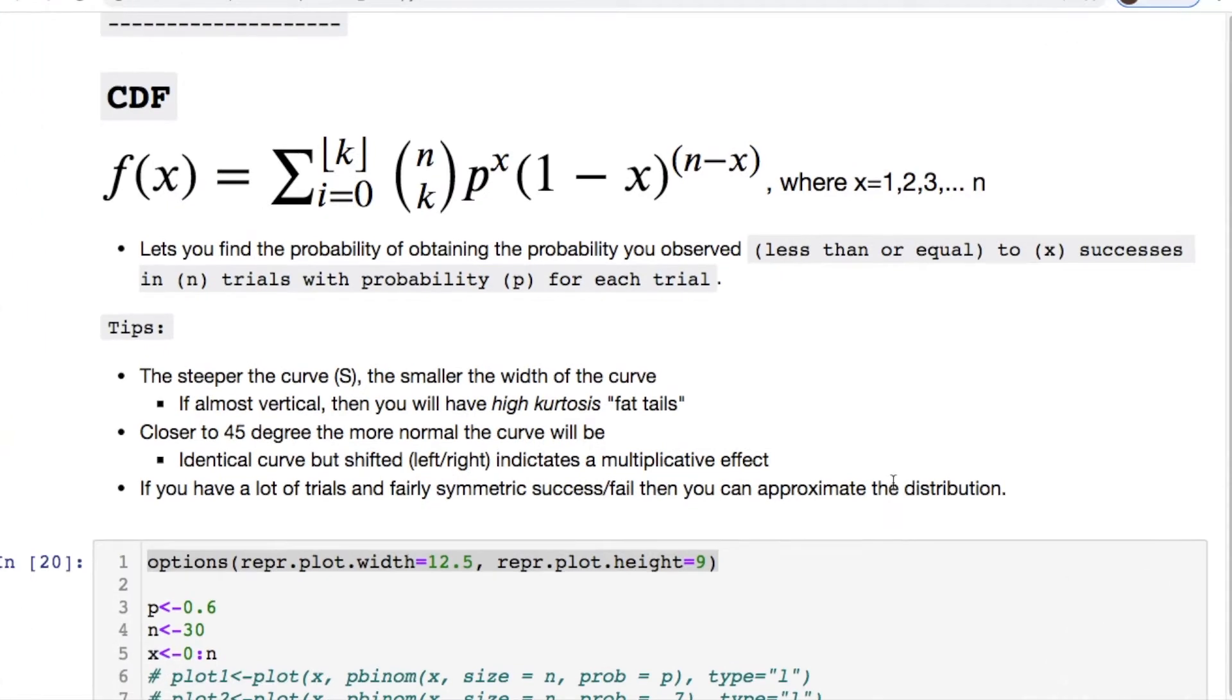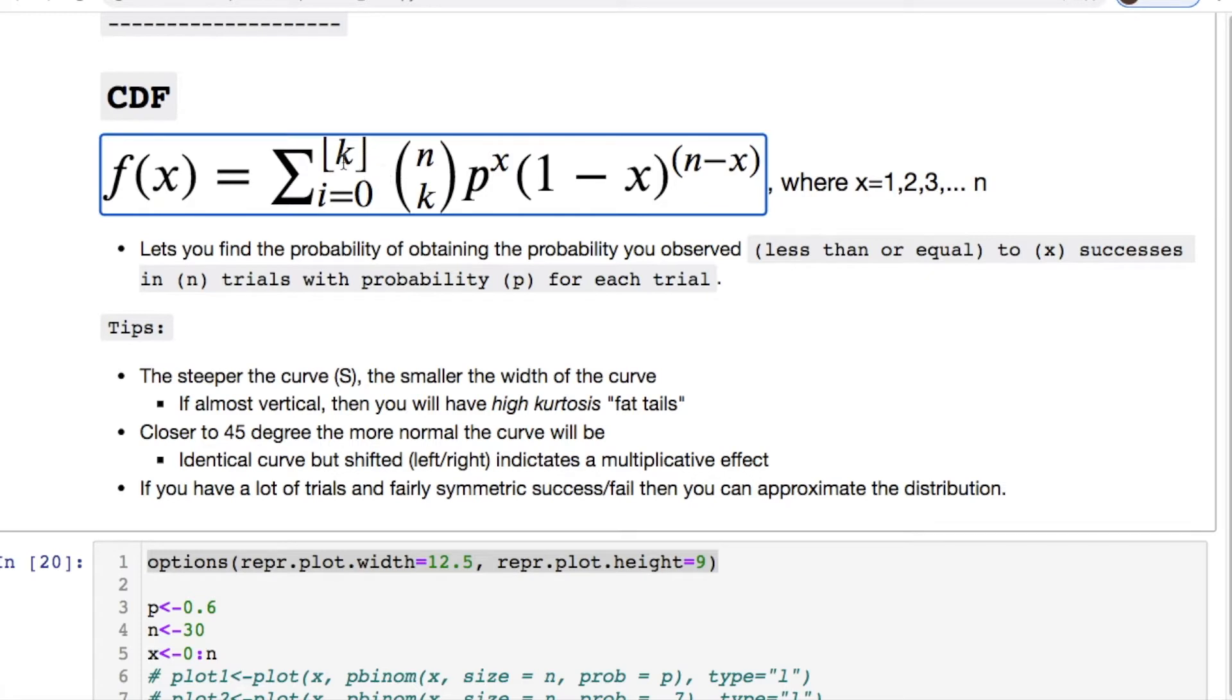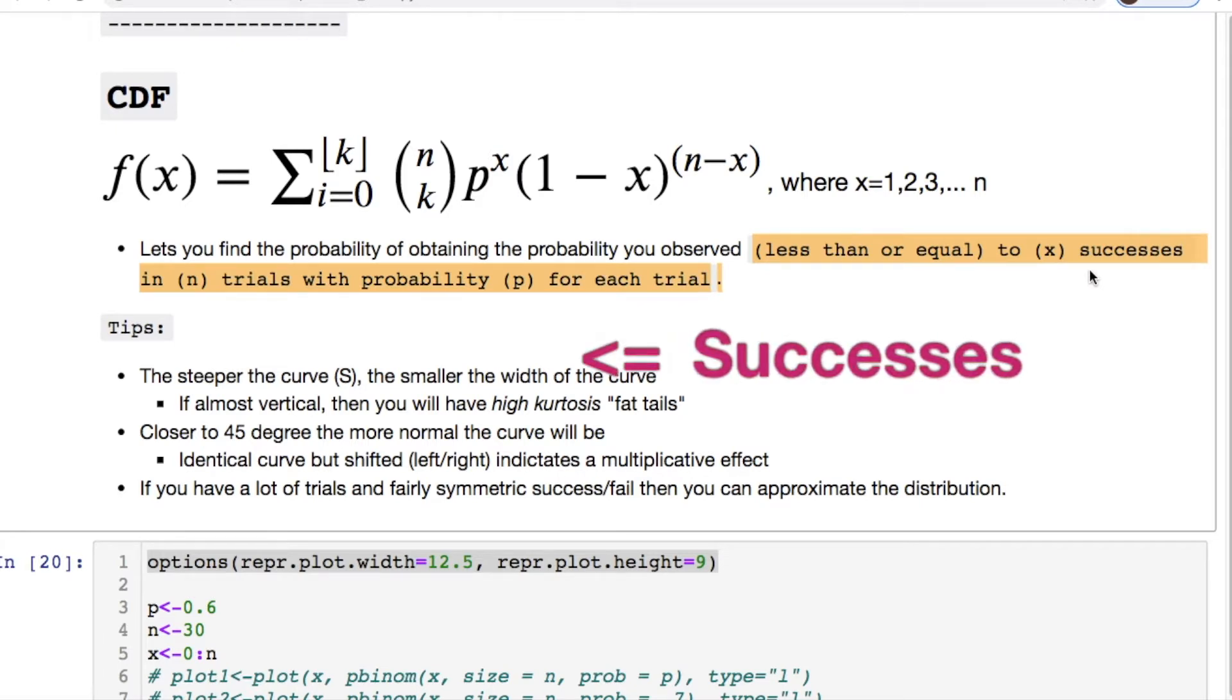Then we have our CDF and this is the function for that. If you notice right here this is the floor function for k inside of here. You're basically finding the probability of obtaining the probability you observe less than or equal to some x number of successes in n trials with some given probability. Just remember it's less than or equal to the number of successes.